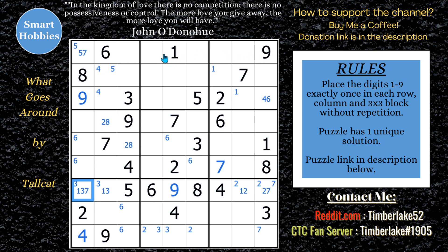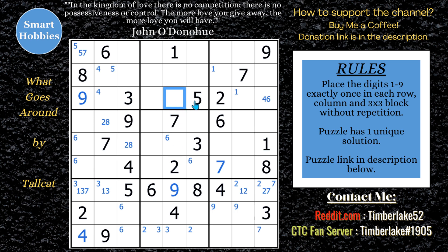I've got some restriction coming up in column five, so let's look at that. We've got a one, two, four, seven, nine already placed, so the remaining candidates are narrowing down. This cell can only be a six or an eight — I'll mark that. And then this can be a three or six, and this one looks like a three, five, six, or eight. Down here, that can be a three or five.